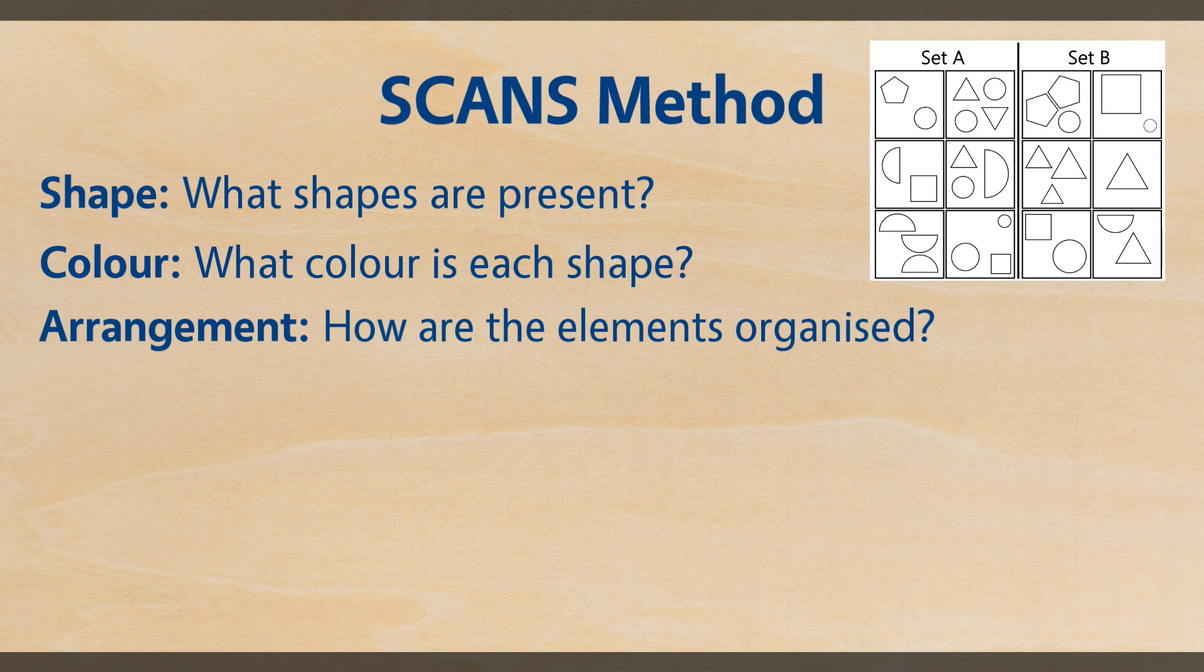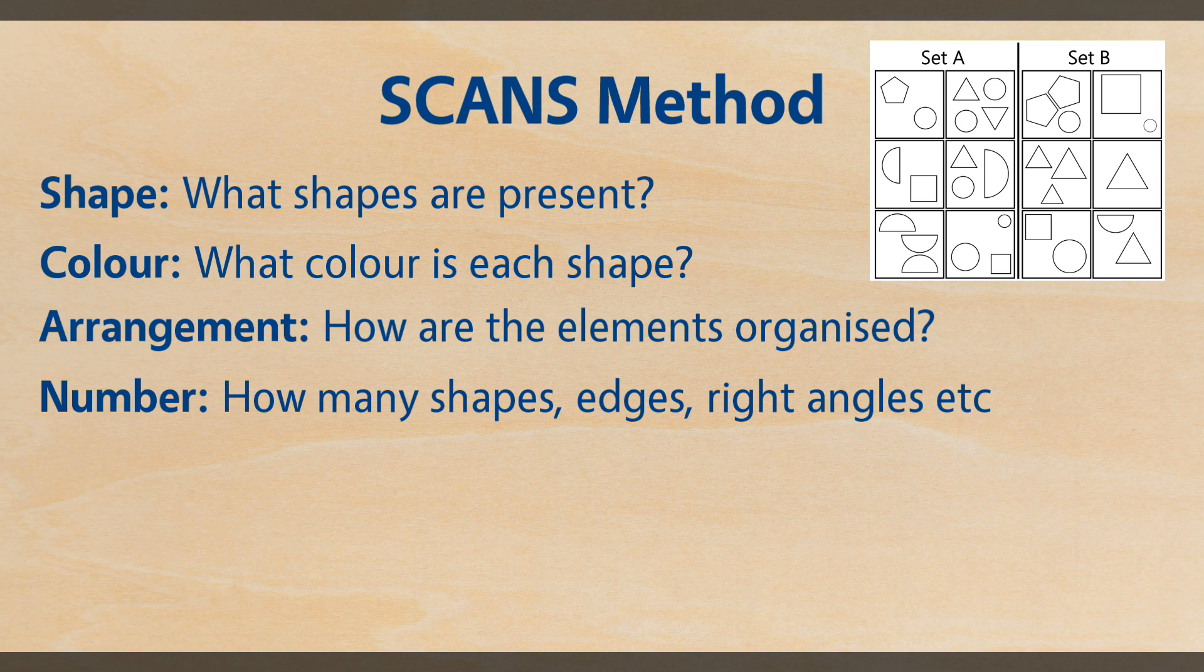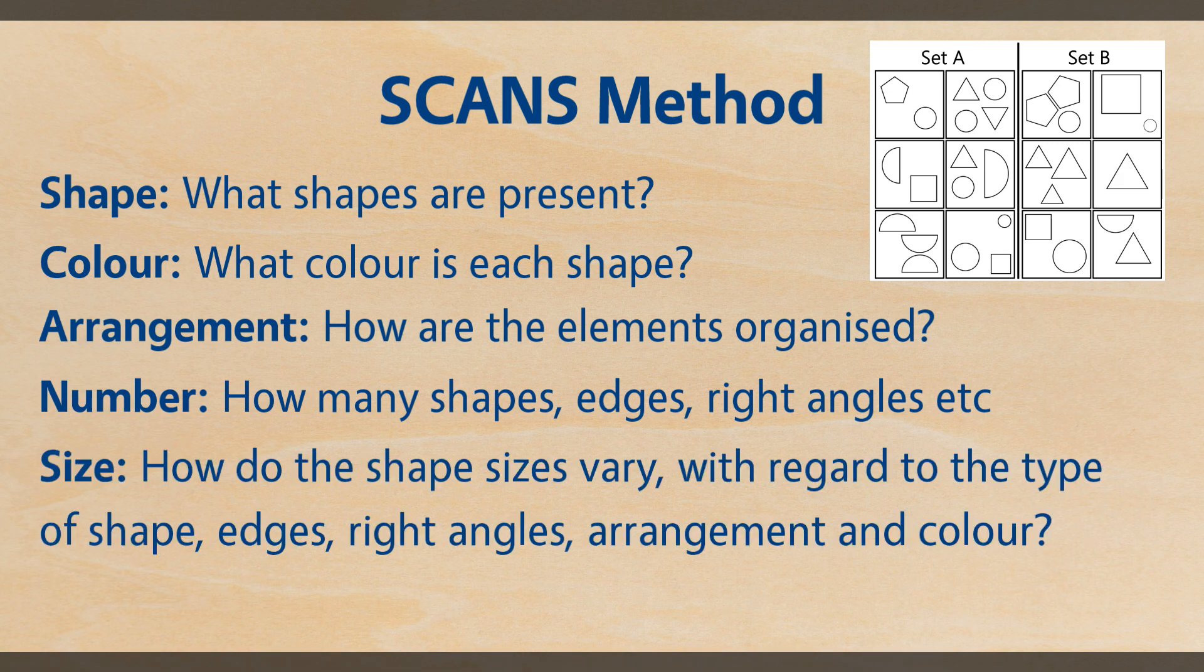A is for arrangement, which is simply, where in the box are the different shapes located? Now we can see just from a quick glance that the distribution is not uniform, so that might be something we want to look out for. N is for number, how many shapes of each type are there, how many sides do they have, and what is the total number of sides and right angles in each box. So this is going to be relevant for us, the number of sides is variable, the number of right angles is variable, so here are some things we can look for. And finally, S is for size. How does the size of each shape vary between the boxes, and does it correlate to colour, arrangement, or a conditional feature, such as the presence of another shape or the total number of sides in the box? So now we have scans in place and we know what we're going to look for.